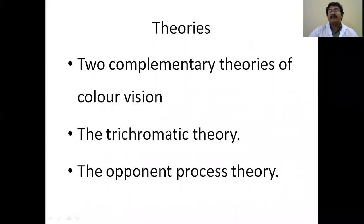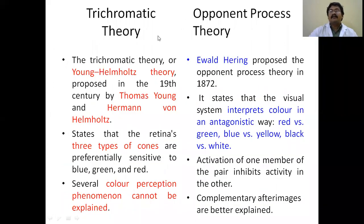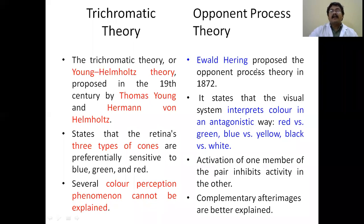The trichromatic theory was proposed by Thomas Young and Hermann Helmholtz. The opponent process theory was proposed by Hering in 1872. The trichromatic theory states that the retina has three types of cones preferentially sensitive to blue, red, and green. However, several color perception phenomena cannot be explained by the trichromatic theory — this is its disadvantage.